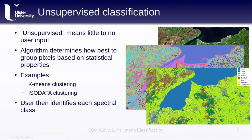Once you've run an unsupervised classification, you can also combine different classes. In the example shown here, you can see there are at least three different unsupervised classes identified over water, depending in part on the colors visible in the true color image.